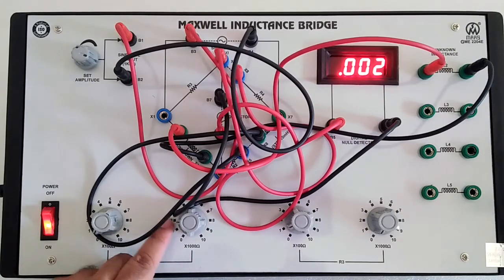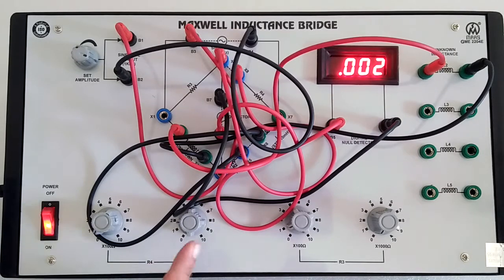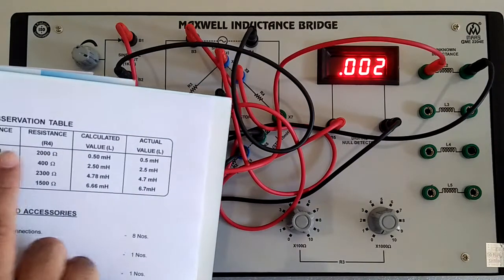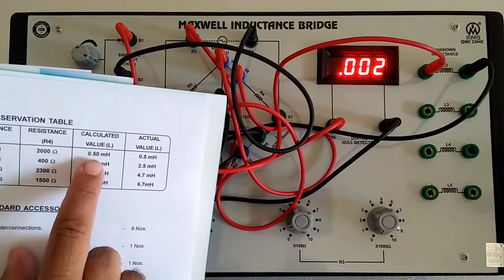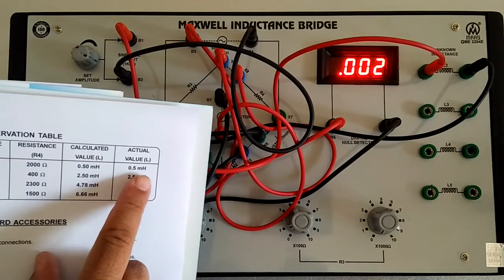1000 and 2, representing 2000. Then R4 is 2000 ohms. When we put the formula with R3 and R4 values, the calculated value is 0.50 millihenry, and the actual value is 0.5 millihenry.